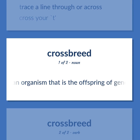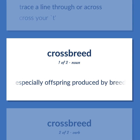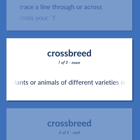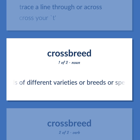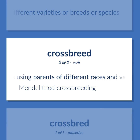In genetics, an organism that is the offspring of genetically dissimilar parents or stock, especially produced by breeding plants or animals of different varieties, breeds, or species. To breed animals or plants using parents of different races and varieties — e.g., 'Mendel tried crossbreeding.'